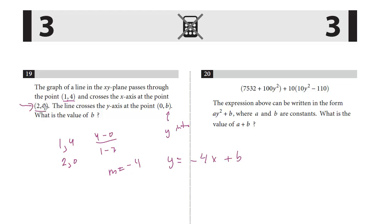I'm going to plug in (2,0). So for y we're plugging in 0 equals negative 4 times 2 plus b. We get 0 equals negative 8 plus b. Add 8 to both sides. We get b is 8. That's the answer. b is 8, the y-intercept.